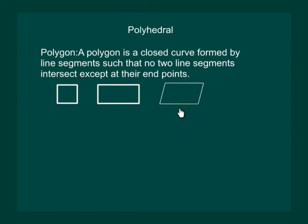hexagon, octagons, heptagons and all are polygons. But a circle is not a polygon as it is not made up of line segments.